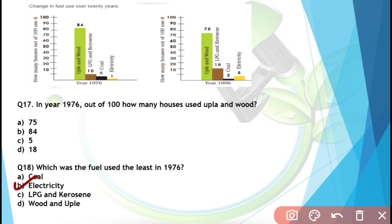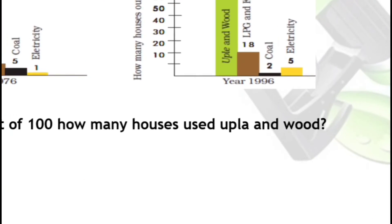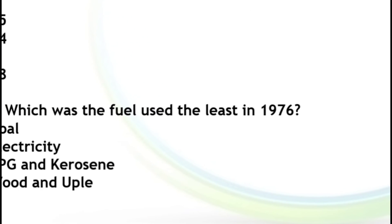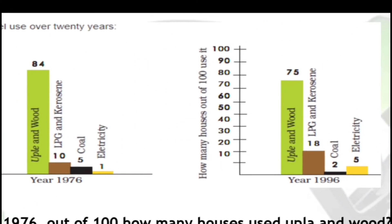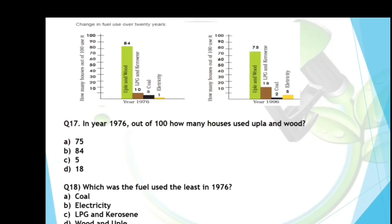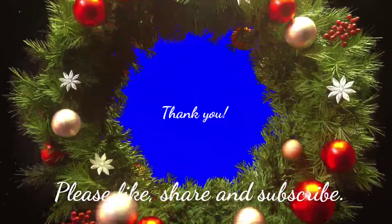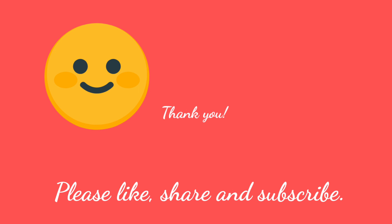For chart-based questions, read the question carefully and check the table values properly. First check which year the question is asking about — there are two years given: 1976 and 1996. Check what the question asks, then read the bar chart to give your answer easily. Thank you, hope you liked my video. Do practice all these questions. We will meet in our next video — please like, share, and subscribe.